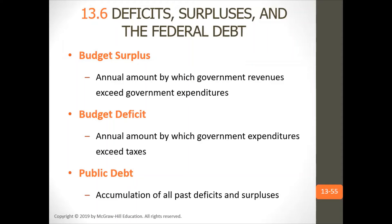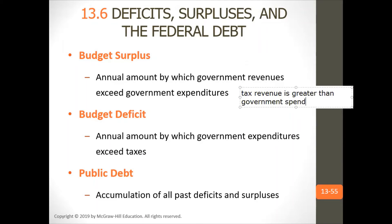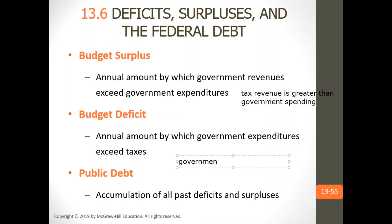Budget surplus is the annual amount by which government revenues exceed government expenditures — tax revenue is greater than government spending. Budget deficit is the annual amount by which government expenditures exceed taxes. Public debt is the accumulation of all past deficits and surpluses.